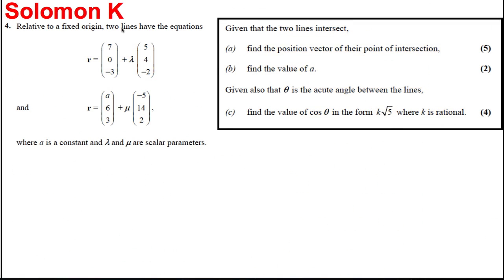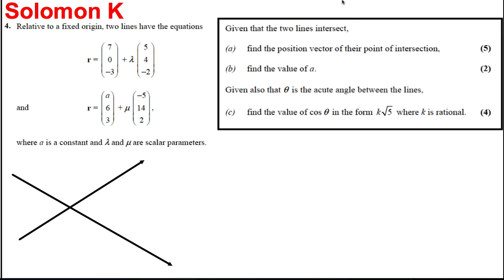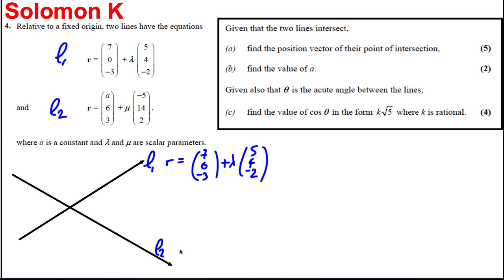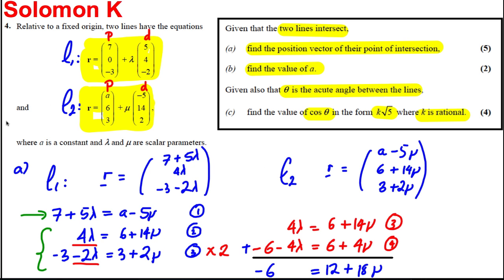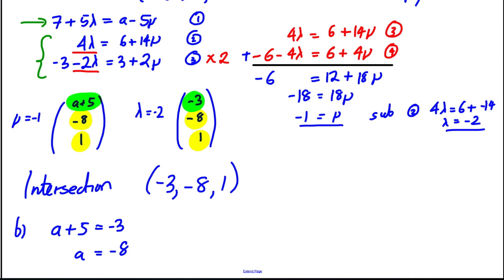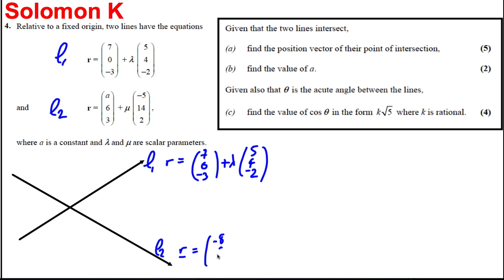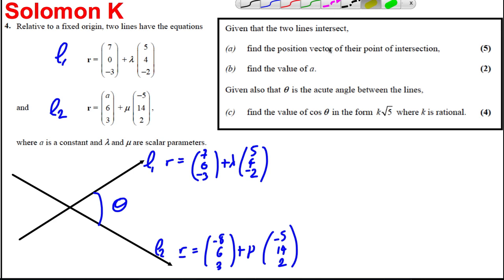For part c, we draw a picture of the two lines L1 and L2. L1: R = (7, 0, −3) + λ(5, 4, −2). L2 with a = −8: R = (−8, 6, 3) + μ(−5, 14, 2). To find the angle between the lines, only the directions matter — the positions are irrelevant.